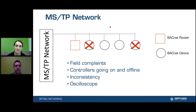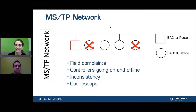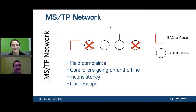Also, inconsistency — the network's up, the network's down, you're getting some data exchange, you're getting none, you're getting slow responses. These are all usually signs of bad MSTP wiring. You can always get out your trusty oscilloscope and connect it and look at it that way — that's a little bit more advanced level of troubleshooting. You've got to understand a little more of how the ins and outs of the protocol works to go to that level, but it is an option.